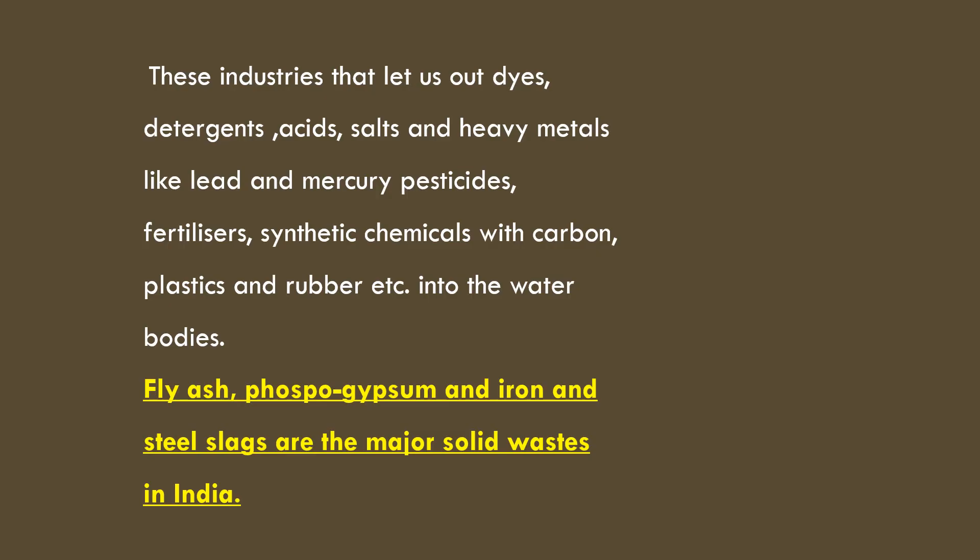Fly ash, phosphor gypsum and iron and steel slags are major solid wastes in India. Fly ash comes from powdered coal. Phosphor gypsum is a co-product when fertilizer is produced, also in powdered form. Iron and steel slag is produced when manufacturing of iron and steel happens in iron and steel plants — they look like small black colored stones.